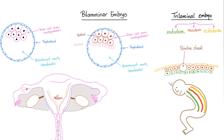To summarize the sequence: fertilization, then the zygote, then cleavage, then the blastocyst. After the blastocyst, you will have the bilaminar embryo — two layers — and then the trilaminar embryo — three layers.